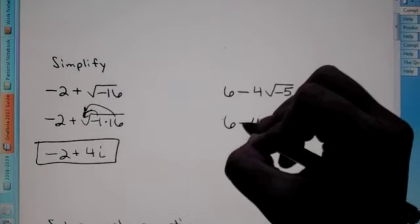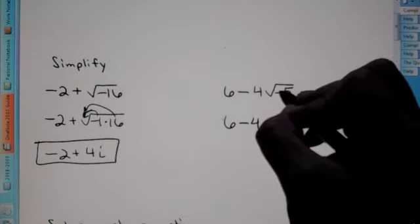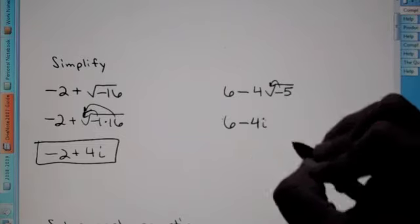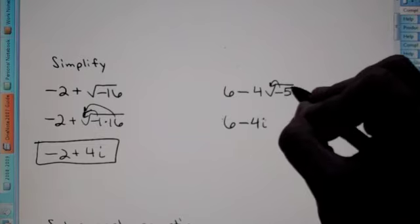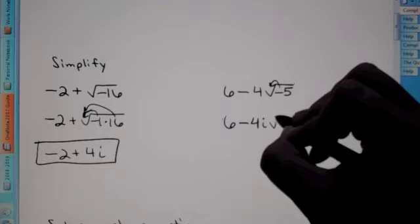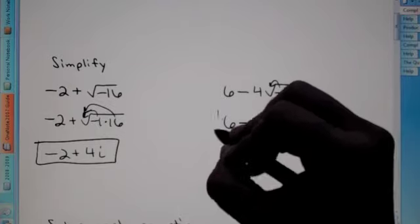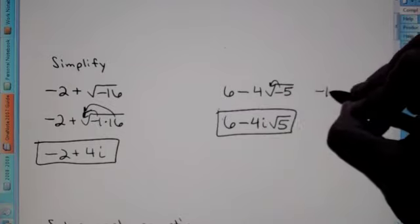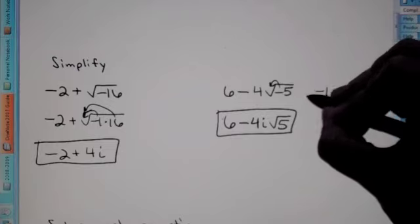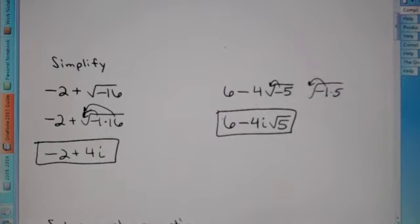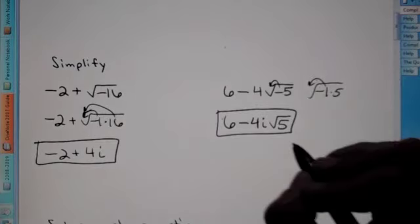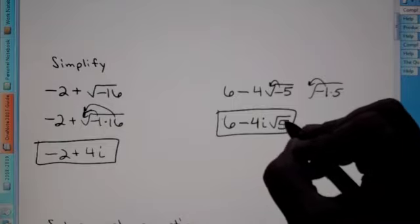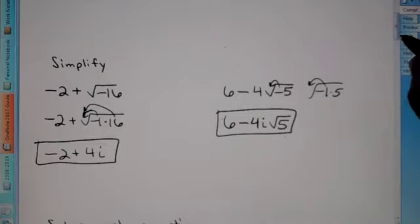Same thing here. We have six minus the square root of negative five. Since we see a negative, we're going to pull that up front and make it an i. But you can't break down five, so you're still left with a positive five underneath — because negative five is negative one times five. We just pulled out the negative one and made it an i. Now we have no negative underneath the root.